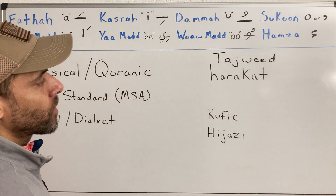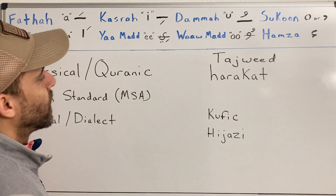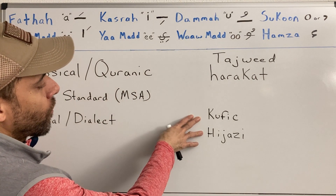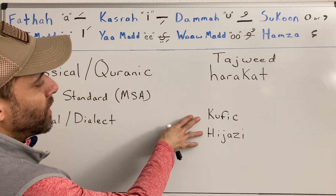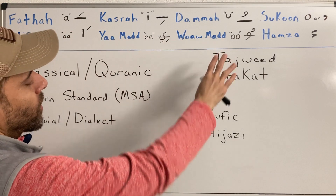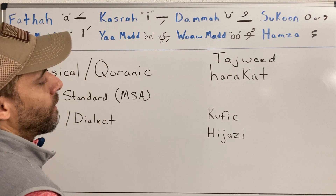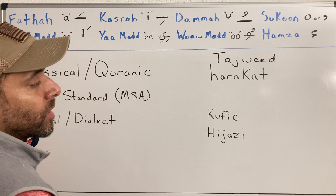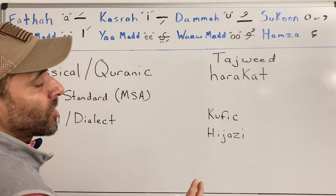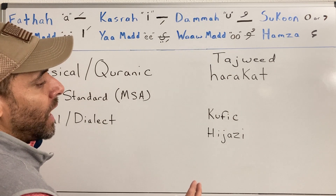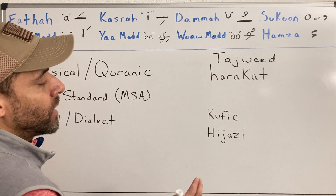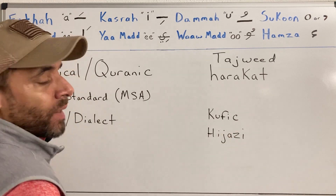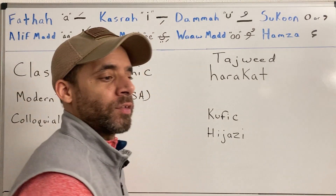Down here we have two words: Kufic and Hijazi. These are two of the early forms of the classical Arabic script. These forms did not have the diacritic markings that you have now. There were a small number of dots present, and through my research, in the Kufic script for instance, these dots were red.